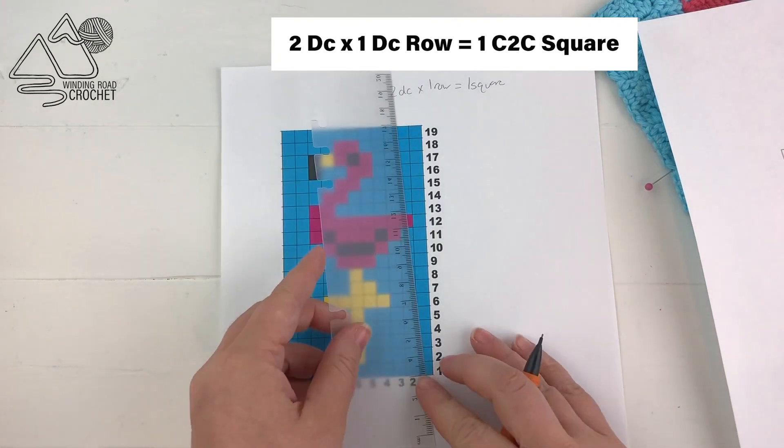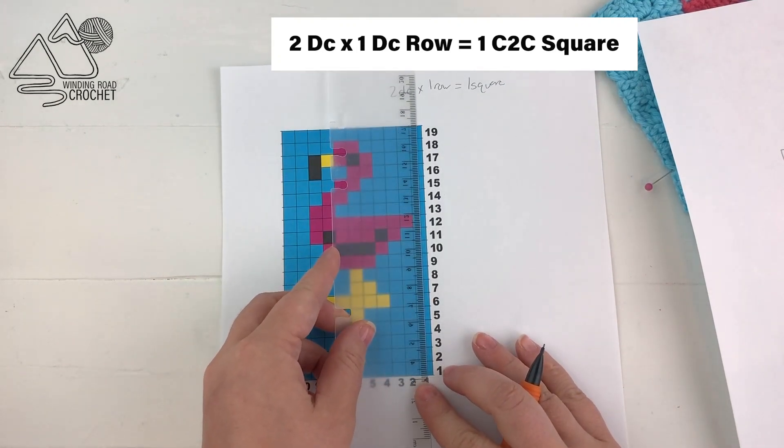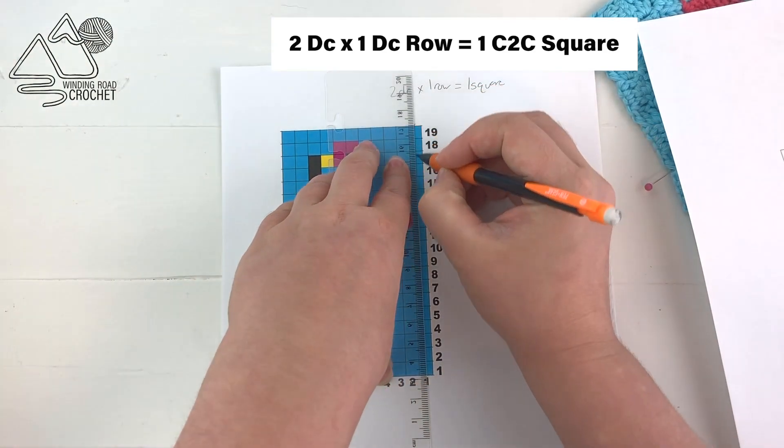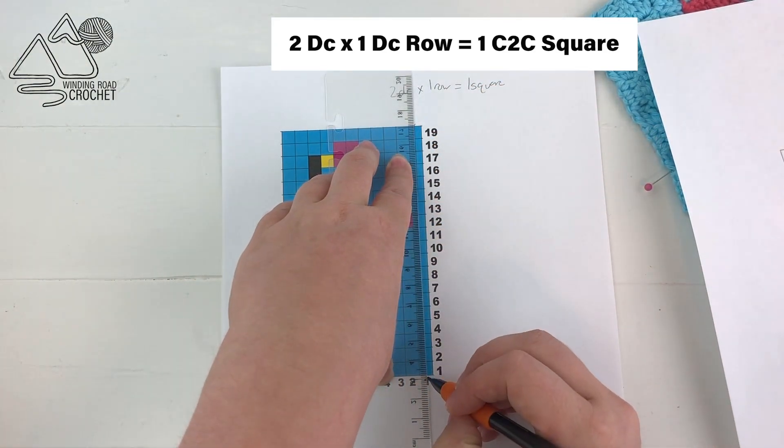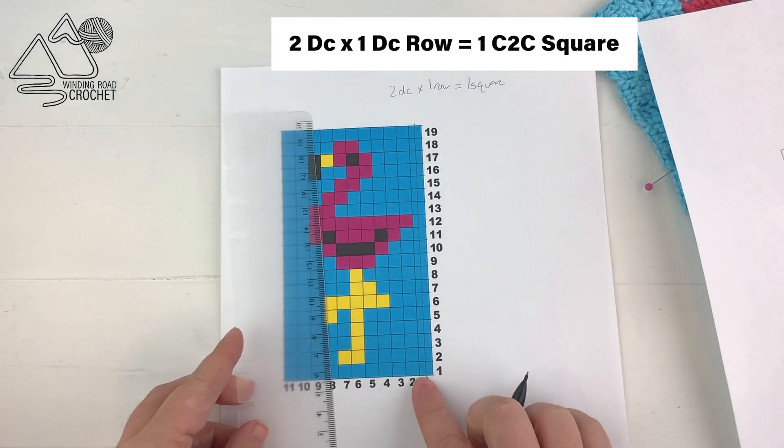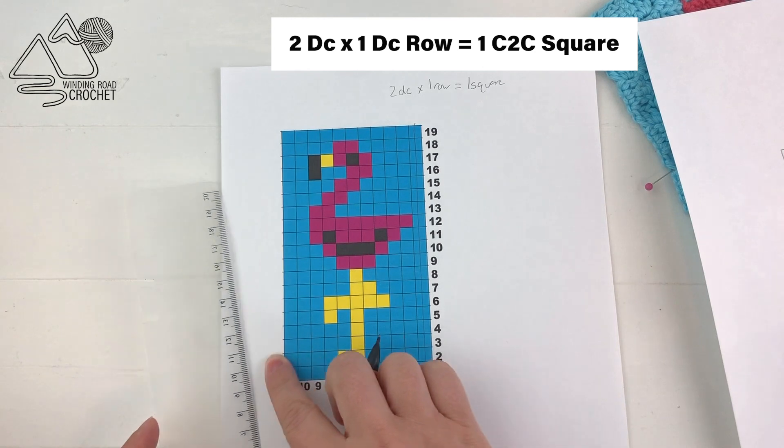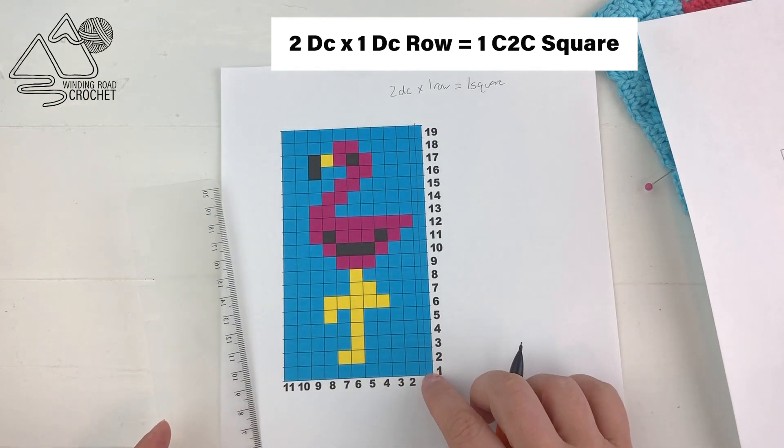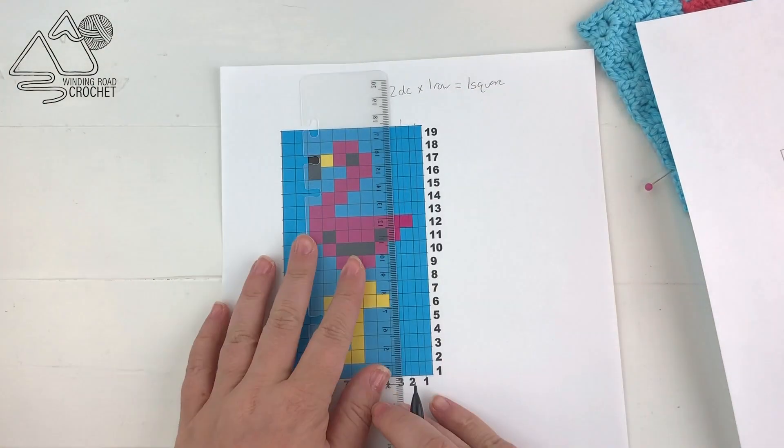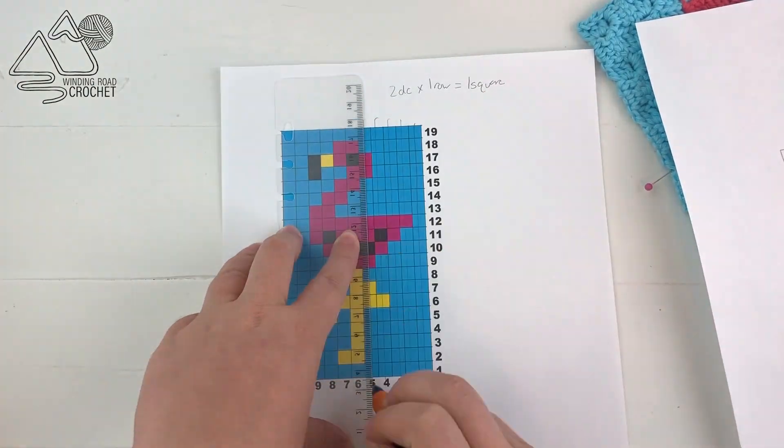As discussed in the previous video, our formula for converting this from a corner-to-corner graph to a double crochet graph is every square is going to equal two double crochet. Now to represent this on our graph here, we are going to take our ruler and our pencil and draw a neat line in between every square vertically.